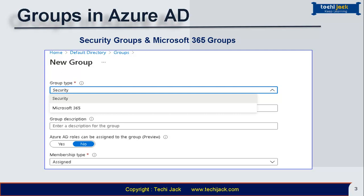Microsoft 365 groups provide collaboration opportunities by giving members access to a shared mailbox, calendars, files, SharePoint sites, and many more. This option is available for admins and users as well.